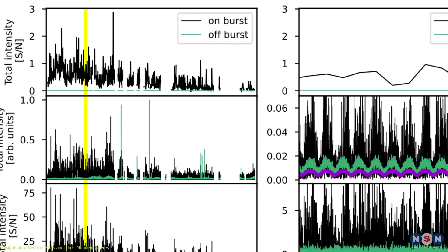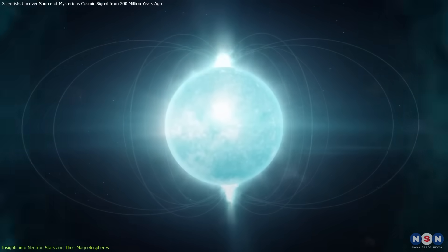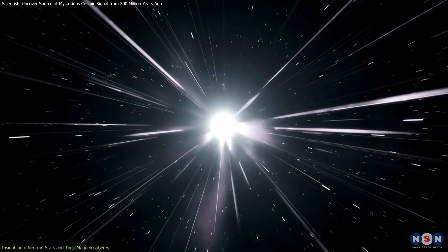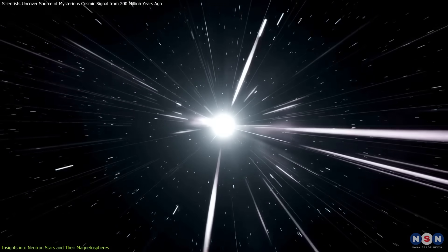In the case of this FRB, scientists believe the burst was generated when magnetic energy within the magnetosphere twisted and reconfigured. This process released immense energy in the form of radio waves, which then traveled across 200 million light years to reach Earth.